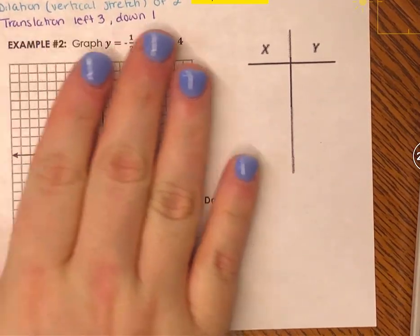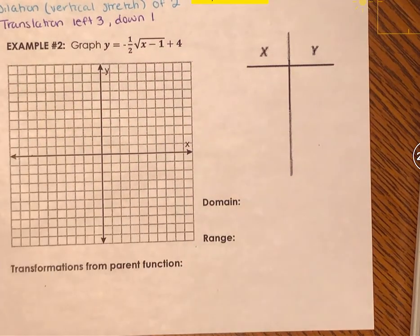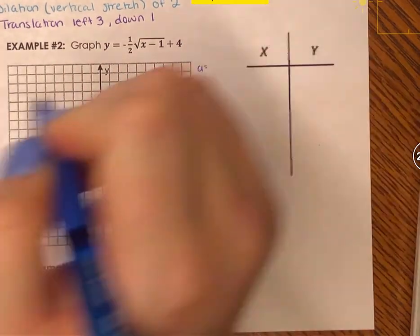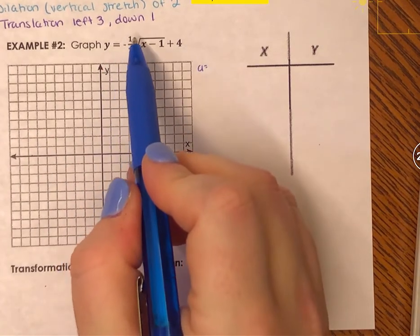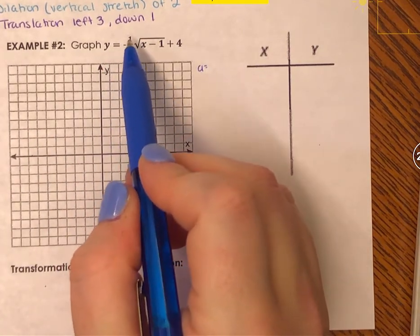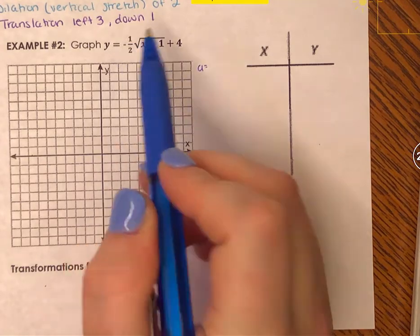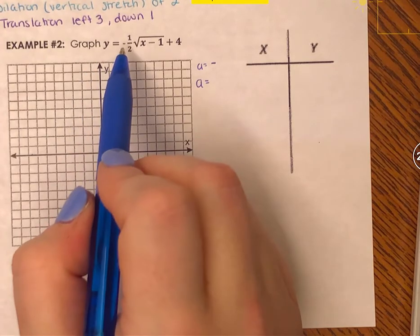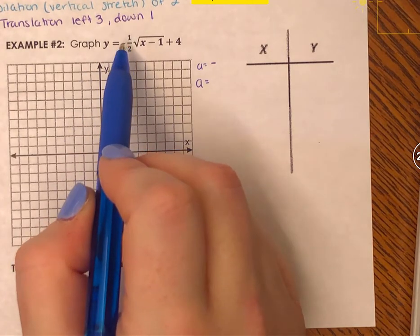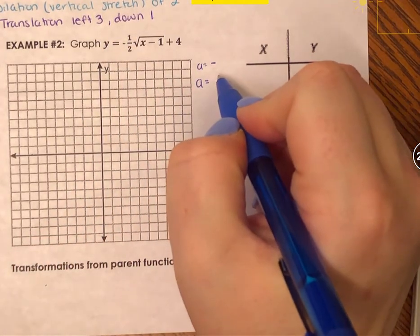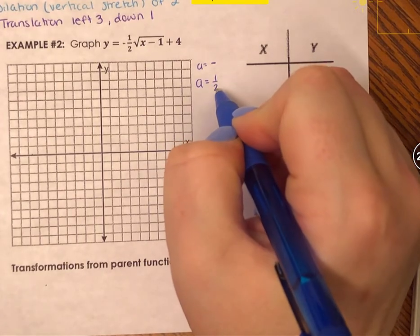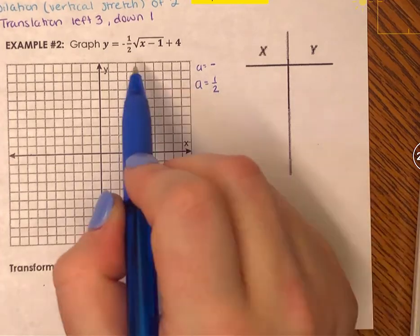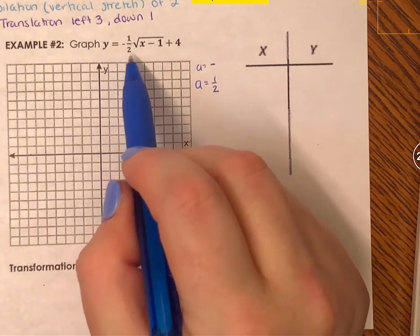Before we do any graphing, I want to find a, h, and k. The a value — we want to determine if it's positive or negative. It's the part multiplied to the radical. The a value is negative. The absolute value of negative 1 half is positive 1 half, so a is 1 half — or combined: negative 1 half.